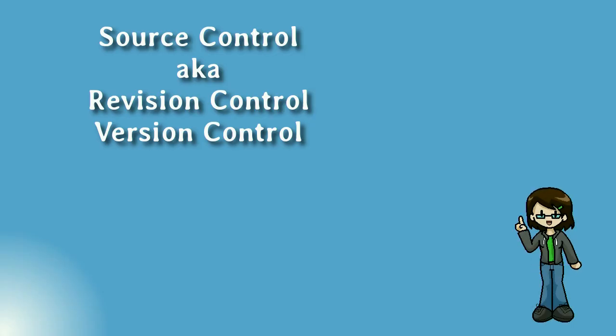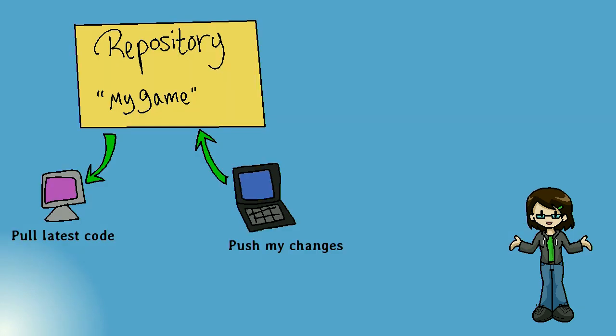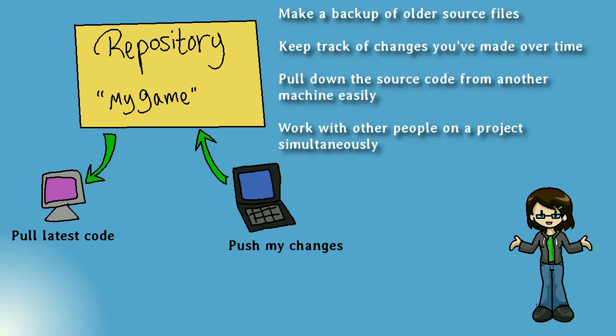Source control, otherwise known as revision control or version control, is a tool to help you manage and keep track of your source files and projects. With source control, you set up a repository where you store your source code. Anytime you make a change to a source file on your computer, you can commit those changes back to the repository. This allows you to make a backup of older source files, keep track of changes over time, pull down the source code from another machine easily, and work with other people on a project simultaneously.